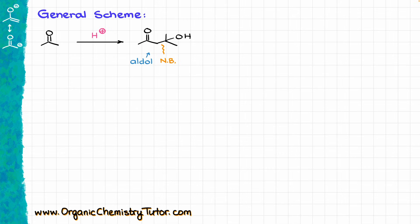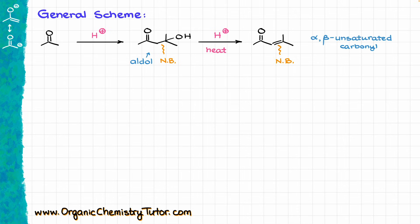However, the aldol may not necessarily be our final product — it can be just an intermediate. If we supply some extra heat, that will cause an elimination reaction, and the new bond is going to be a double bond. This type of compound we typically refer to as the alpha-beta-unsaturated carbonyl. You might also hear the term 'catein,' where 'cate' refers to the ketone part of the carbonyl and 'in' refers to the adjacent double bond. Although catein is the IUPAC correct name, we commonly refer to these as alpha-beta-unsaturated carbonyls.